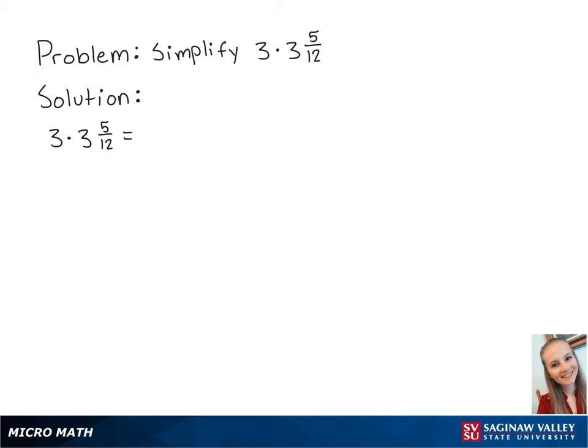For this problem, we're going to simplify 3 times 3 and 5 twelfths. First, we need to convert the mixed numbers into fractions.